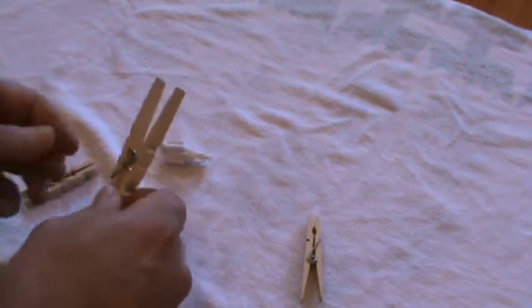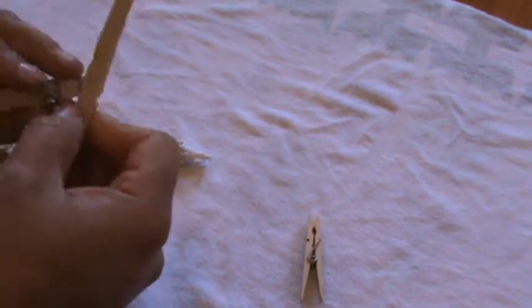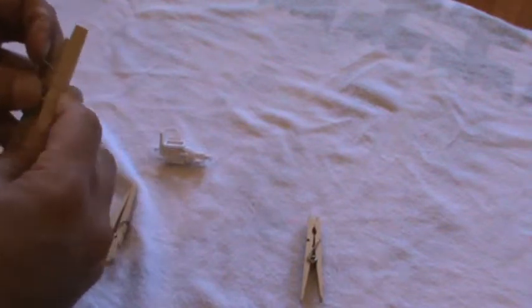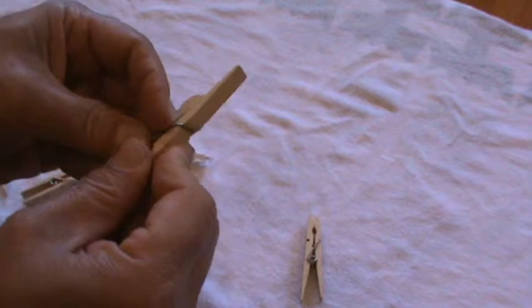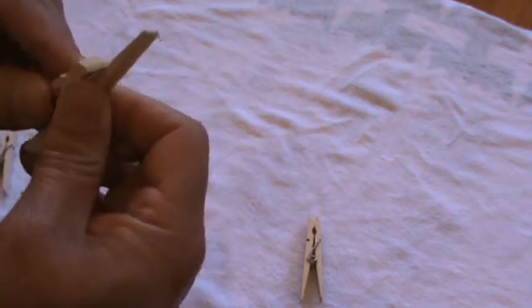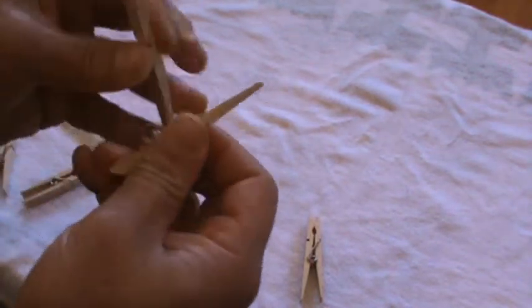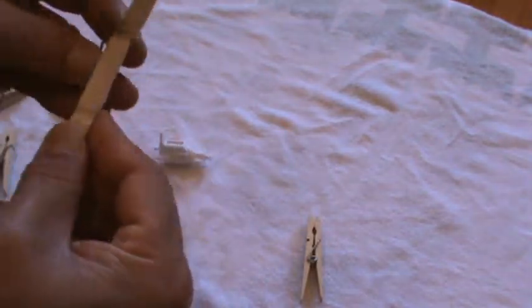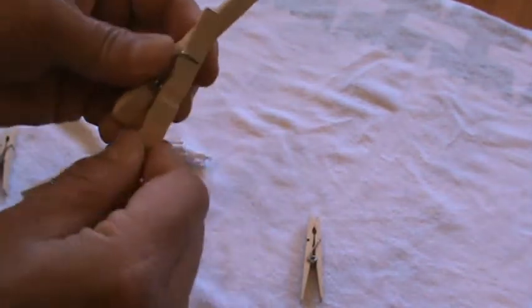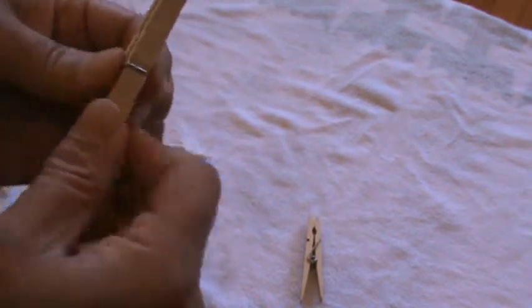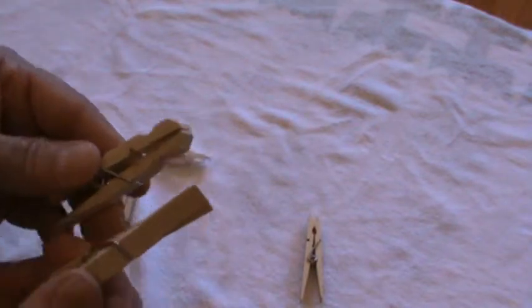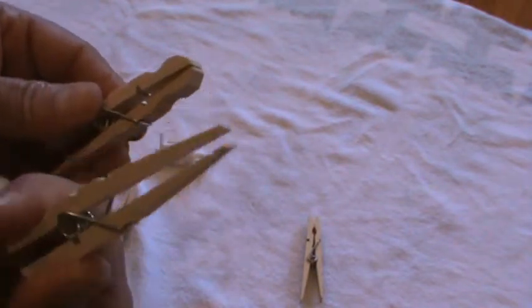You can also take it and turn it around so that spring is in this notch, get this apart, and slide the other one through there. And now you got this flat one. So a couple variations on the clothespin.